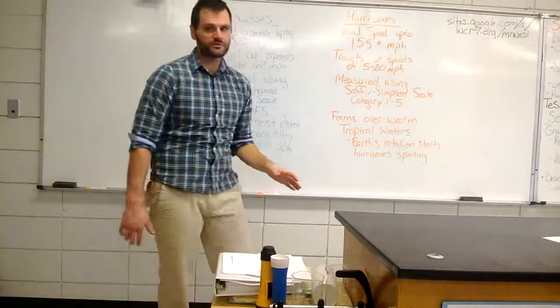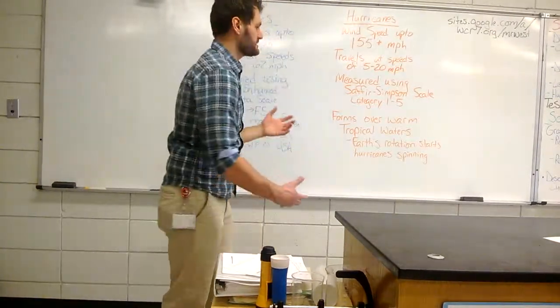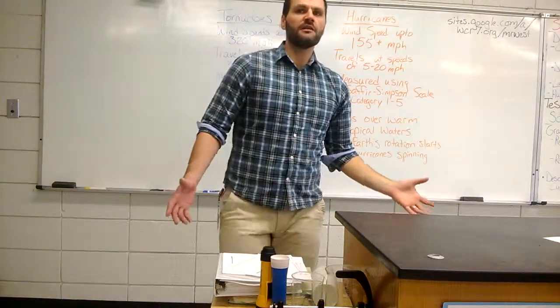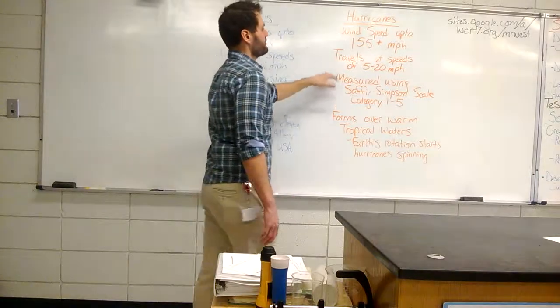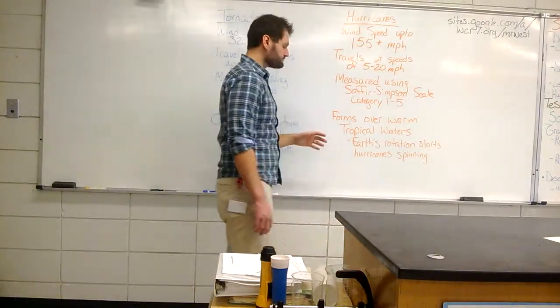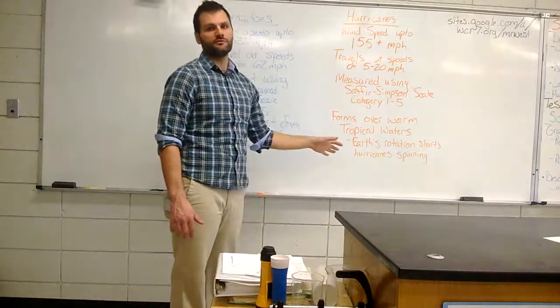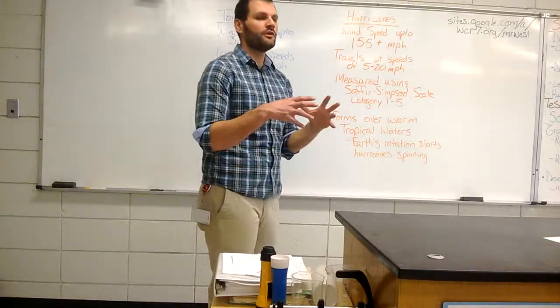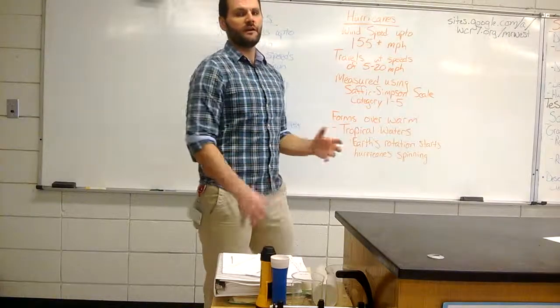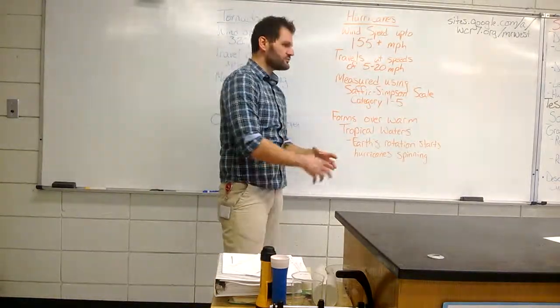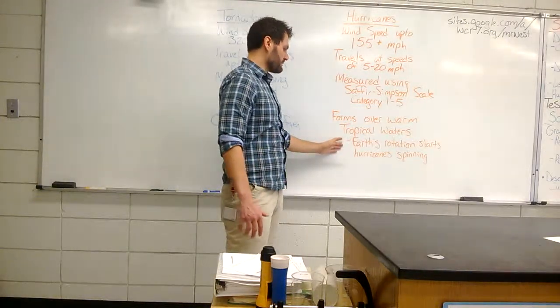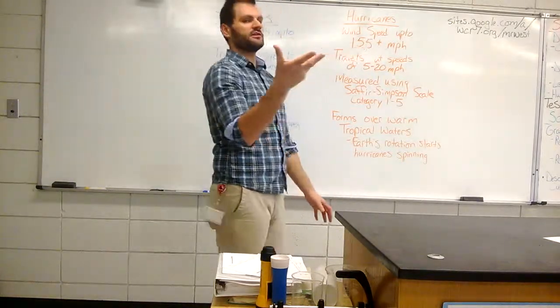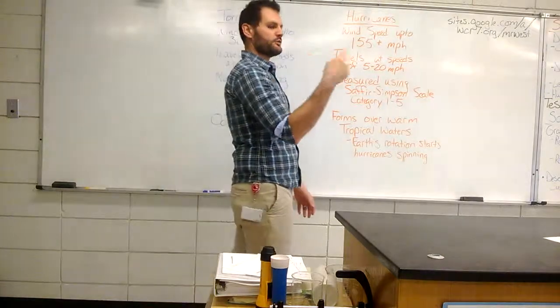They are measured using what we call the Saffir-Simpson scale. That's broken into categories—Category 1 through 5, Category 5 being the biggest with the highest wind speeds. Hurricanes form over tropical waters. We have to have lots of warm water evaporating into the air, making these huge clouds over tropical waters. Then Earth's rotation actually starts those clouds spinning.